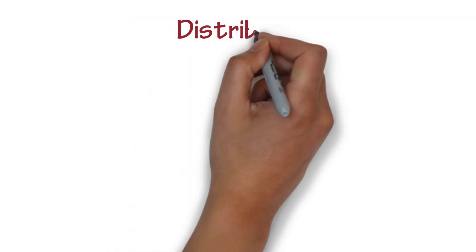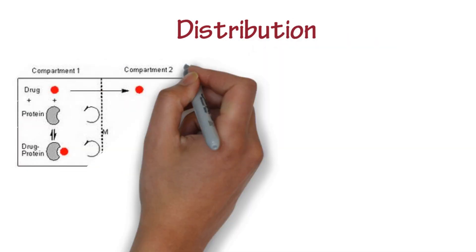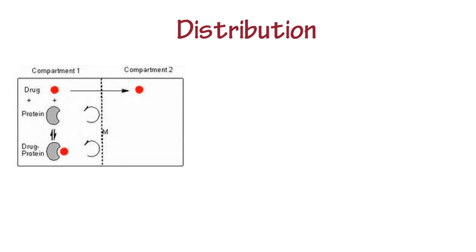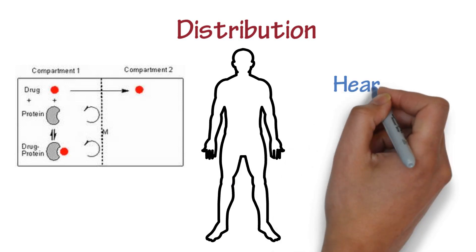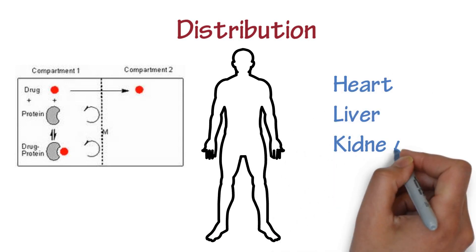Distribution is defined as the movement of a drug within the body once the drug has reached the blood. The blood will carry the drug throughout the body and to the sites of action. Drugs are rapidly distributed to organs with high blood flow: heart, liver, and kidneys.